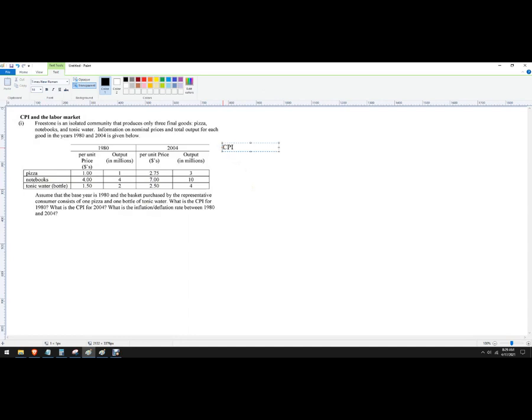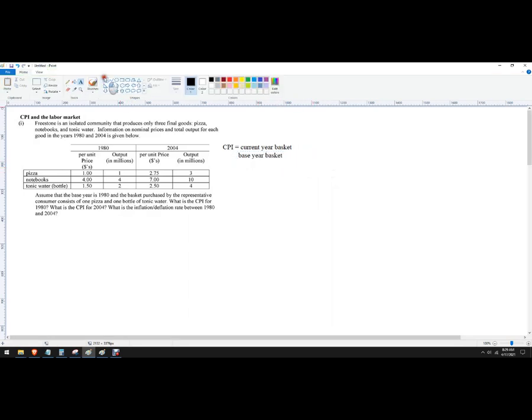So CPI formula is the current year basket divided by the base year basket. And then I want to multiply all of that by a hundred.